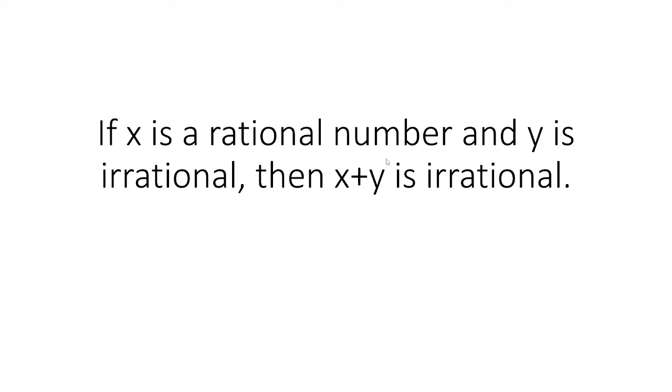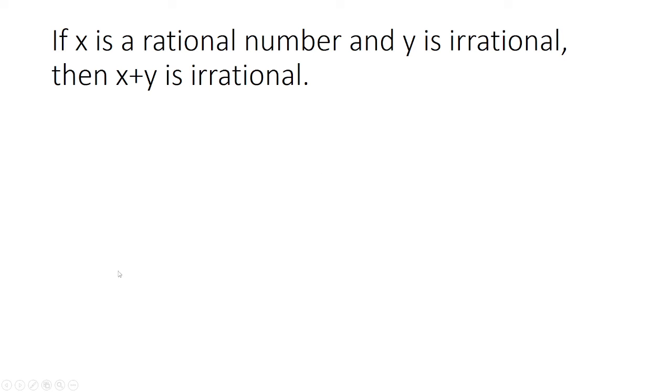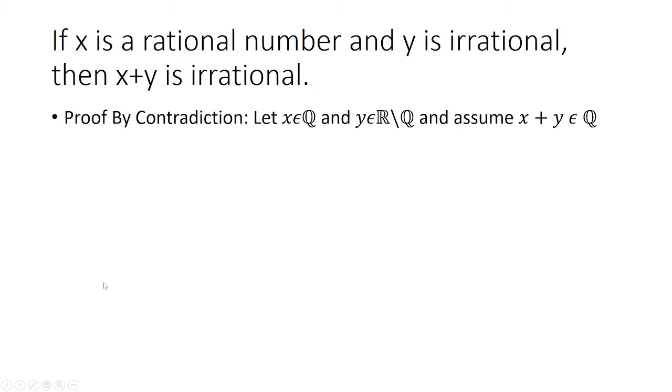If x is a rational number and y is irrational, then x plus y is irrational. So let's prove this. This can be a proof by contradiction.